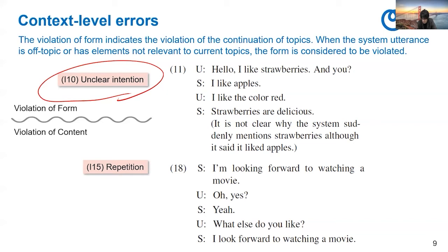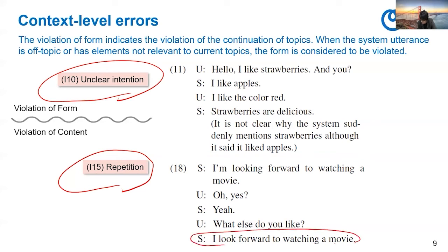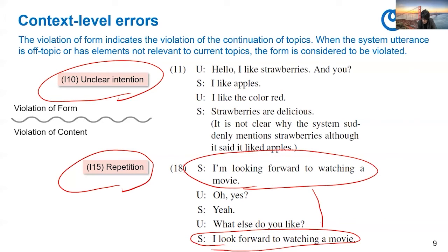As for the violation of content at the context level, we have I15 repetition. The dialogue looks like this: the system says 'I'm looking forward to watching a movie,' the user says 'Oh yes,' the system says 'Yes, yeah.' The user says 'What else do you like?' and the system says 'I look forward to watching a movie,' which is almost the same as the earlier utterance. So this is regarded as a repetition error.